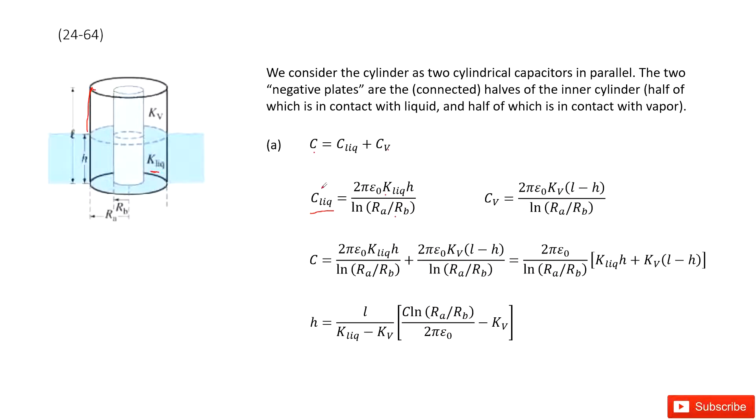Now we input C liquid and C V inside. We get a function that looks like this one. We organize it, and you get it looking like this one.